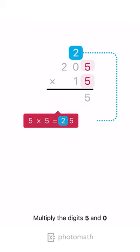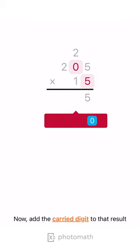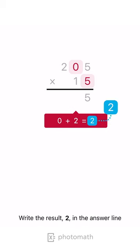Multiply the digits 5 and 0. Now, add the carried digit to that result. Write the result, 2, in the answer line.